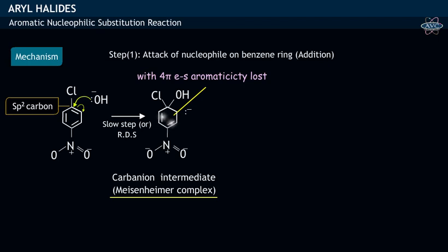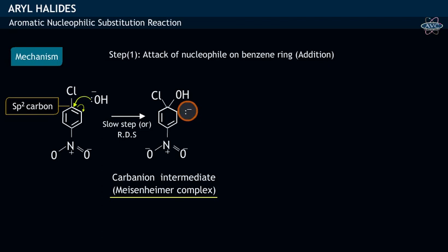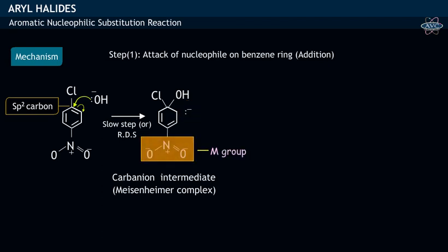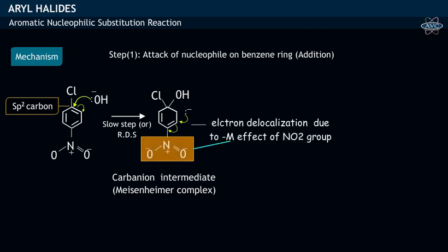Here the aromaticity is lost. Actually, the carbanion with excess electrons is a highly unstable species. But due to the presence of the electron withdrawing nitro group at the para position, the excess electrons on the carbanion are delocalized by the electron withdrawing resonance effect, or minus M effect.